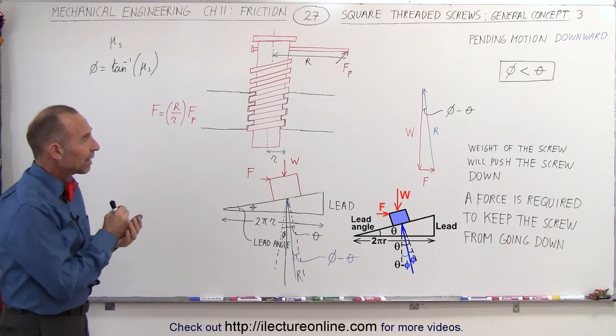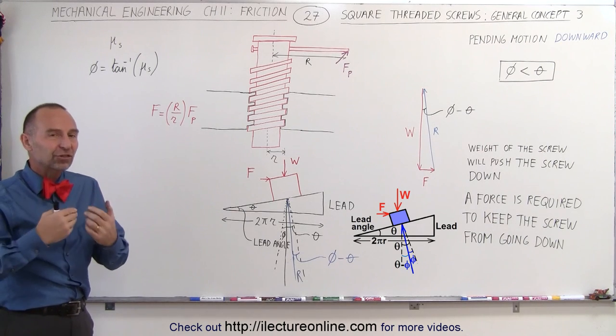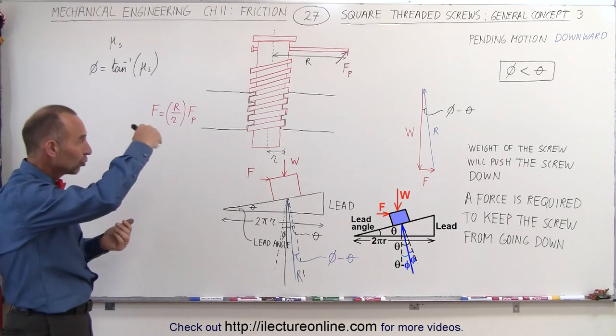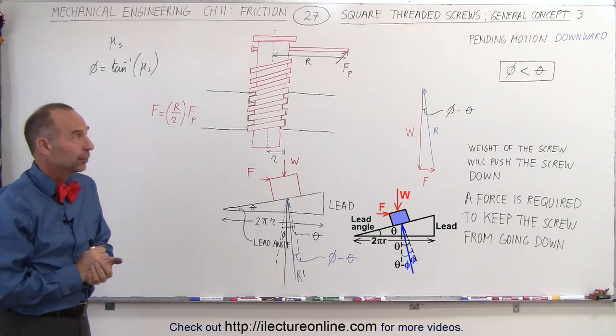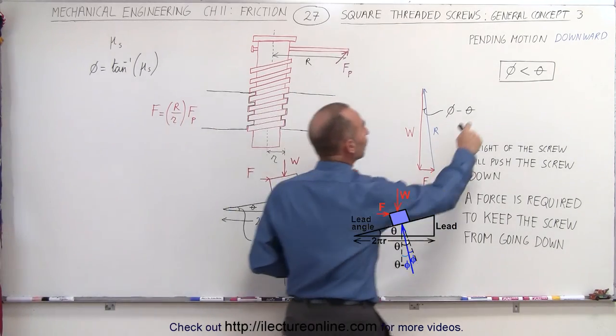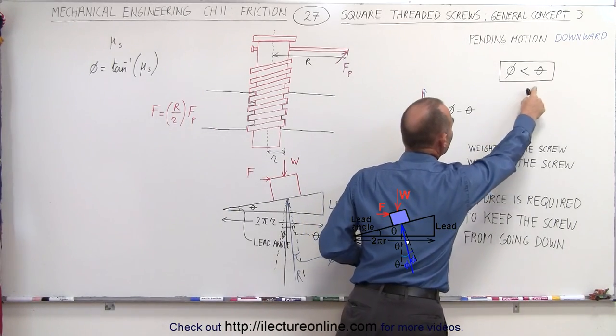But here we have a situation where the weight of the screw itself is sufficient to overcome the friction and the screw will actually go down on its own. This is the situation where the angle phi is smaller than the angle theta.